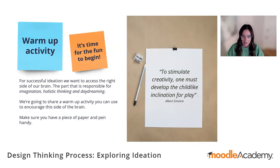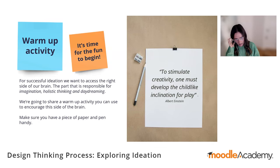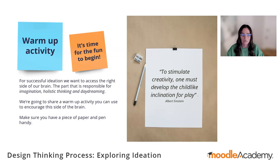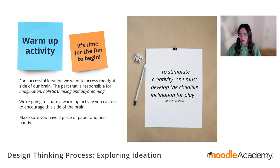We're going to run through a warm-up activity. For successful ideation we really need to access the right-hand side of our brain — the part responsible for daydreaming, imagination, and holistic thinking. Make sure you have a pen and a piece of paper ready. At the end of the first round, please share in the chat how many things you write down. As Albert Einstein said: 'To stimulate creativity, one must develop the childlike inclination for play.' I hope you're all ready to play.